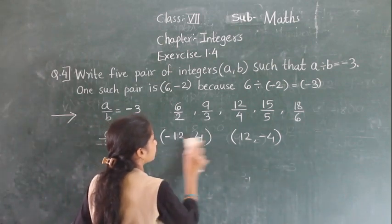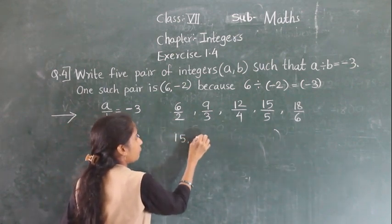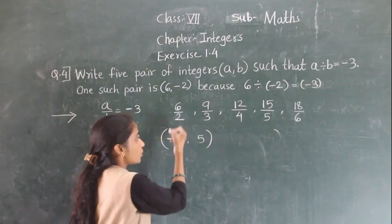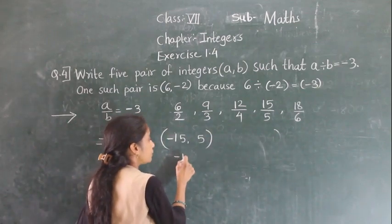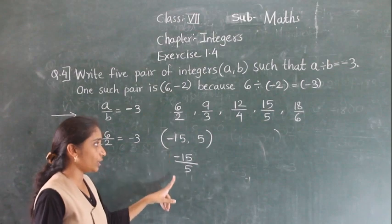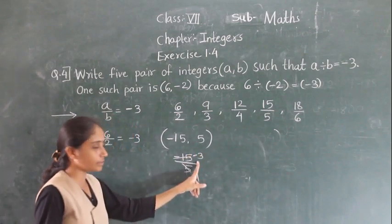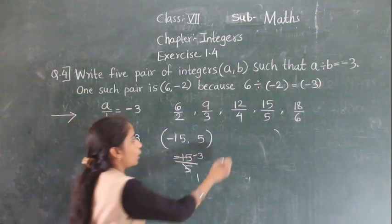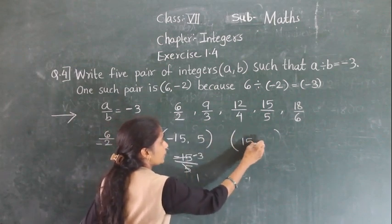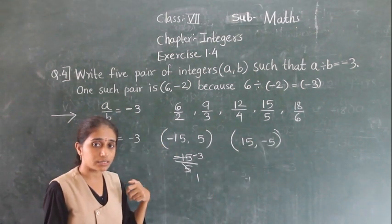Next pair: 15 and 5. Give the minus sign — minus 15 upon 5 gives minus 3. Or 15 and minus 5: 15 upon minus 5 also gives minus 3.